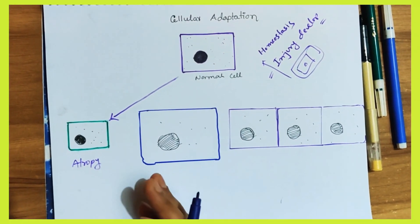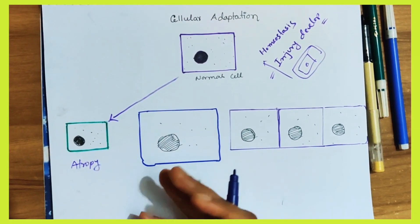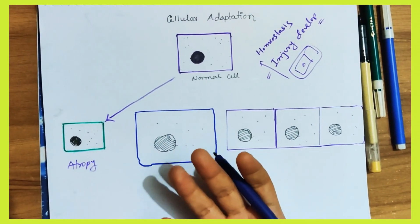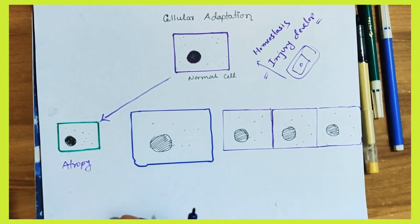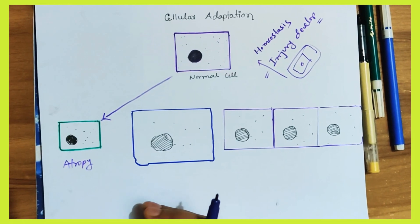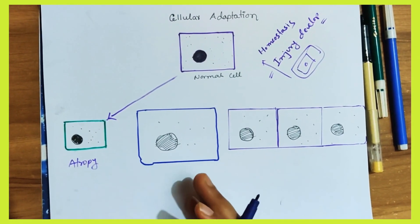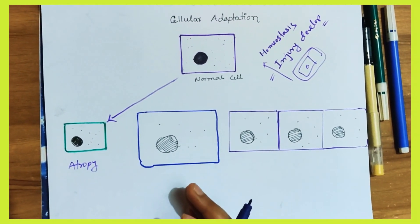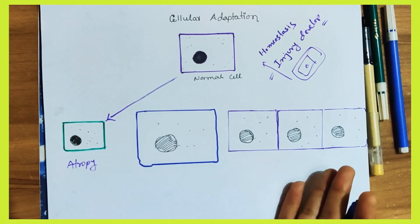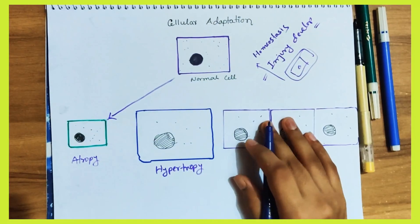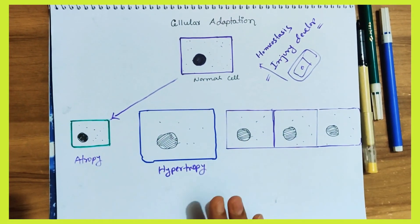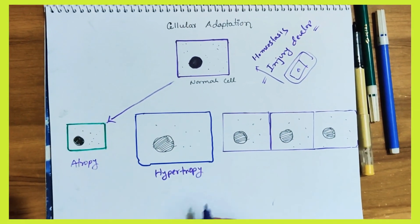The main causes of atrophy include: if you have a blood supply diminished, and there is an endocrine stimulation loss. These are the main causes. Second is hypertrophy.